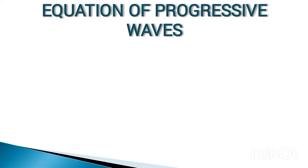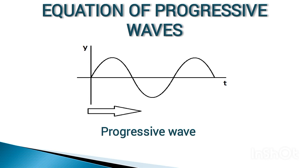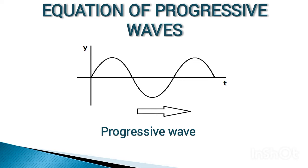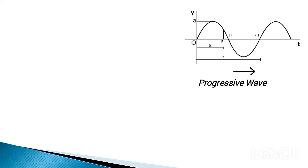Today our topic is the equation of progressive wave. We are going to derive the equations of progressive waves. First of all, a progressive wave is any wave that can travel from one region of a medium to another. Here you can see a progressive wave traveling from left to right in a medium. Now let's move towards the derivation.